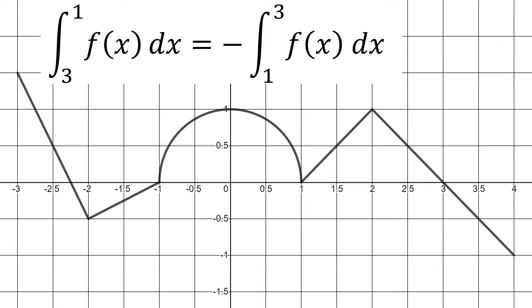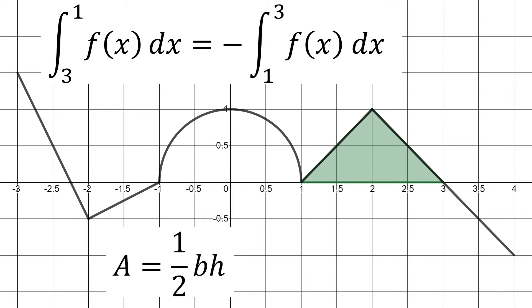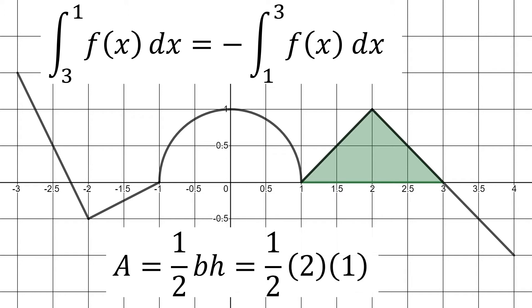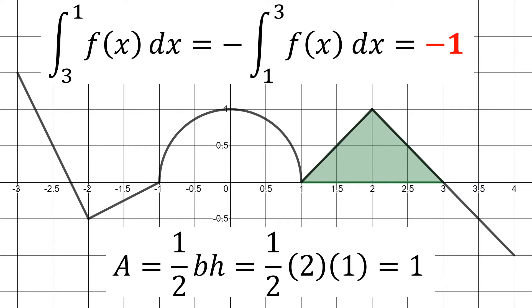Now that we're looking at it from one to three, the shape between the graph and the x-axis looks like a triangle — and it's green because it's above the x-axis. The area of a triangle is one half the base times the height. The base is two units from one to three, and the height is one unit from zero up to one. So one half times two times one gives us one. But since we switched the limits of integration, we had a negative out front, so our solution is negative one.